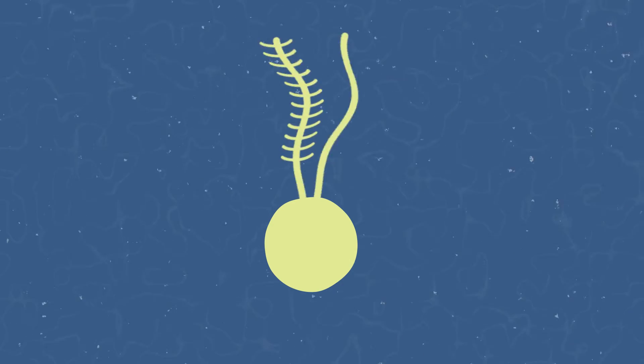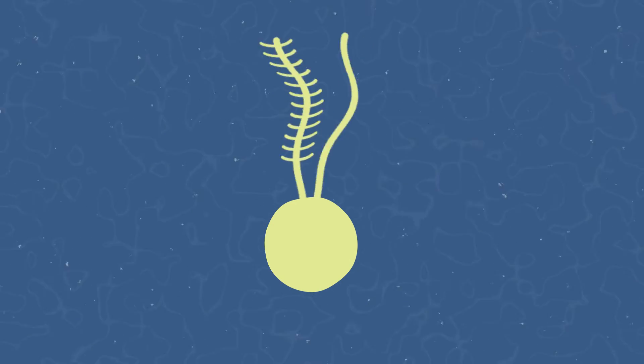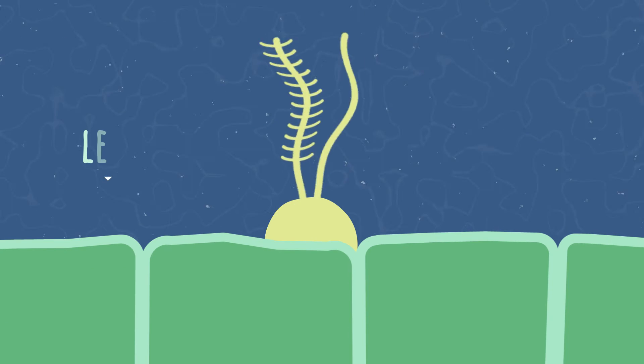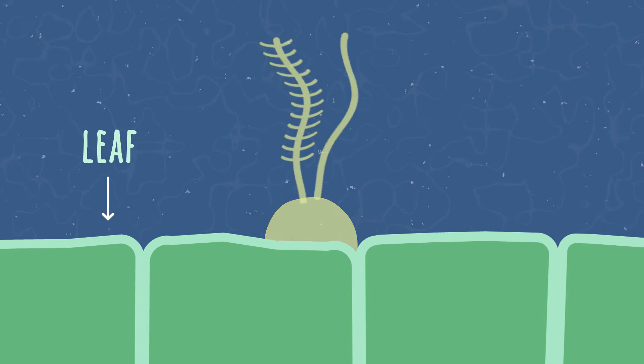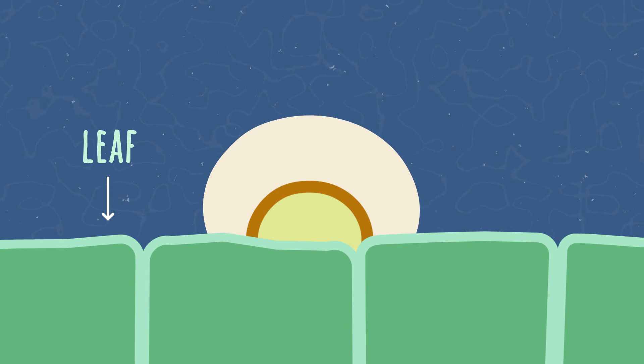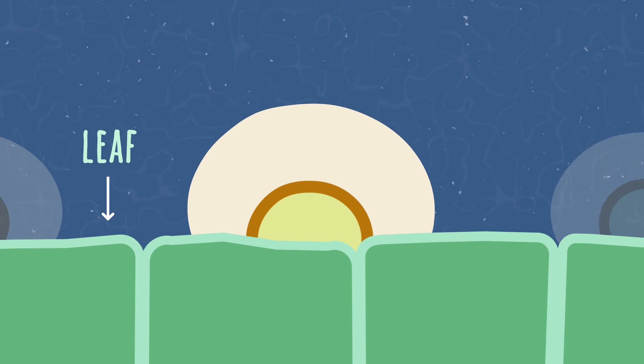Once the zoospores and sporangia reach the roots, stems, leaves, or fruit, they germinate, penetrate, and colonize these plant parts.